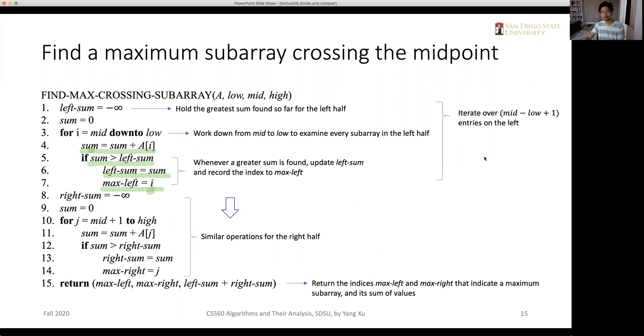So if we count a little bit the number of how many iterations are gone through, the first for loop iterates over mid minus low plus one, which is basically all the elements on the left parts of the original inputs. And the second for loop iterates over all the elements on the right. So altogether, they iterate over all the elements in the input array, which is indicated by the number n.